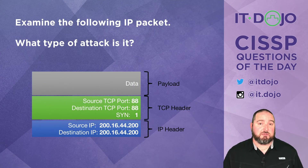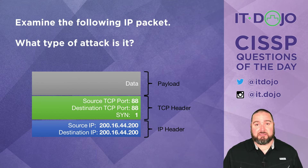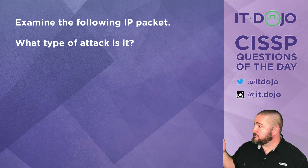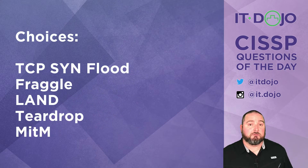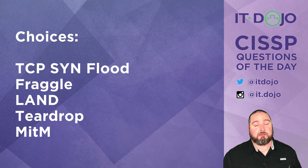Question number two: there's a picture of an IP packet — it's an attack. What kind of attack is it? Here are the answer choices. Click pause if you need to; when you're ready, click play and we'll break it all down.